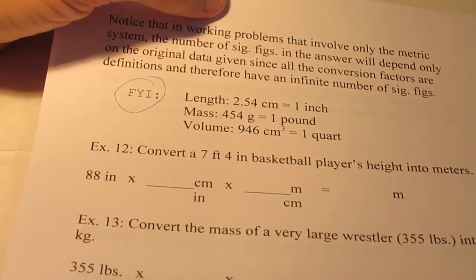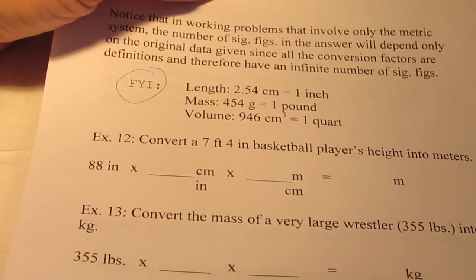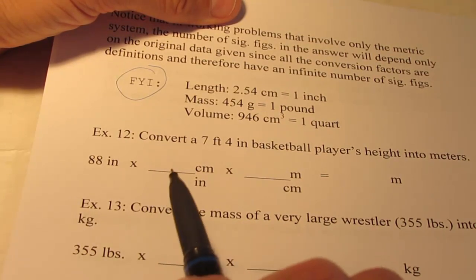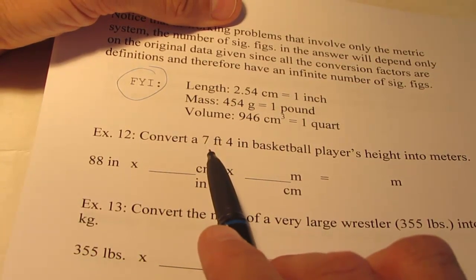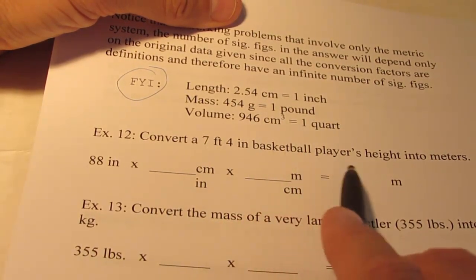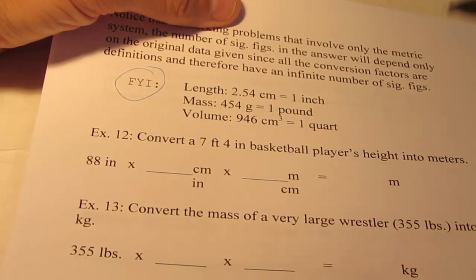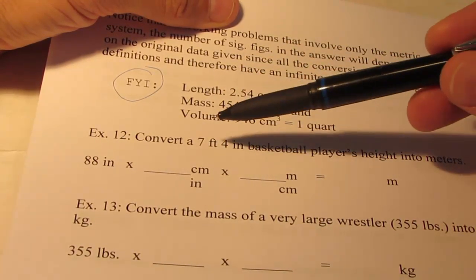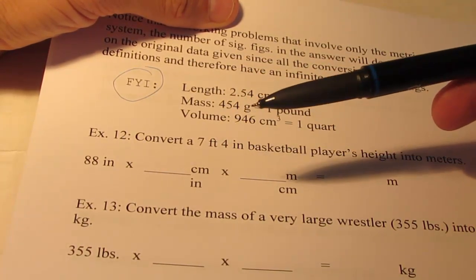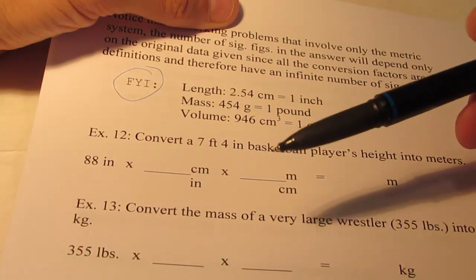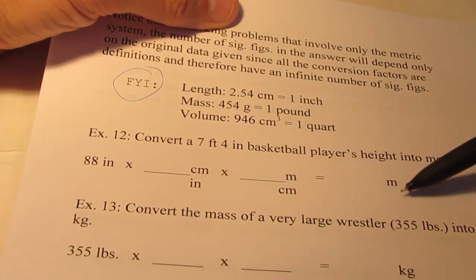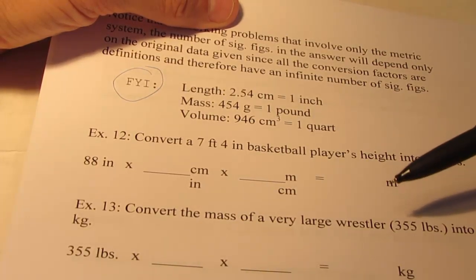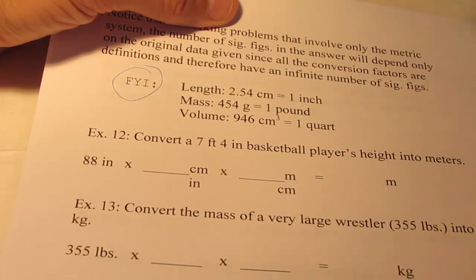So let's do a couple of English to metric and vice versa examples. You'll have a few of these on your assignment. So let's say I wanted to convert a 7 foot 4 inch basketball player's height into meters. Now make sure your answer makes sense. You folks know about how long a meter is, so you know that this person that's 7 foot 4 probably isn't going to be much more than 2 maybe 3 meters tall.